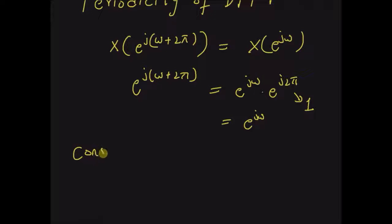So what is the consequence? The consequence is that we have to know the discrete time Fourier transform only for the interval ω ∈ [0, 2π].